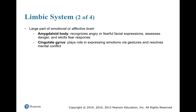Some structures here would include the amygdaloid body, which from pathology and imaging we know is involved in recognizing angry or fearful facial expressions. We use it to assess danger and it helps to elicit a fear response. The cingulate gyrus has a role in expressing emotions through our gestures and helps us to resolve mental conflicts.